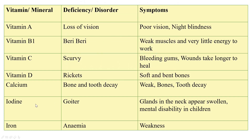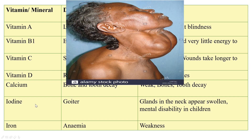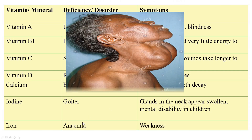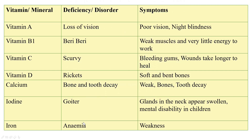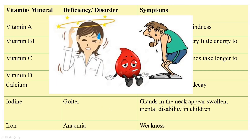Iodine deficiency causes goiter — glands in the neck appear swollen — and can also lead to mental disability in children. Iron deficiency leads to anemia, where you always feel weak and tired.